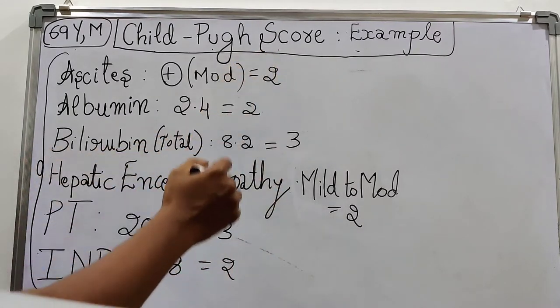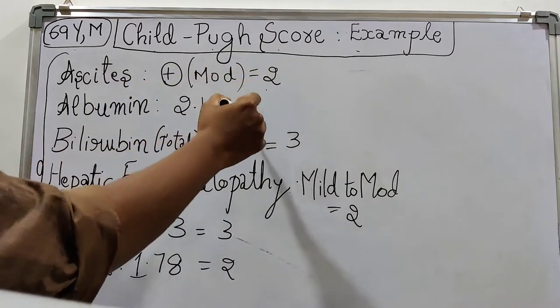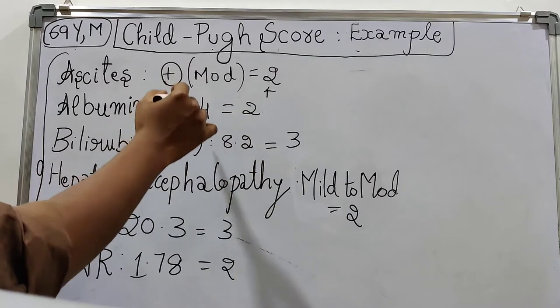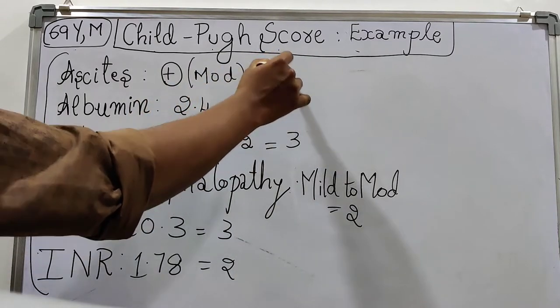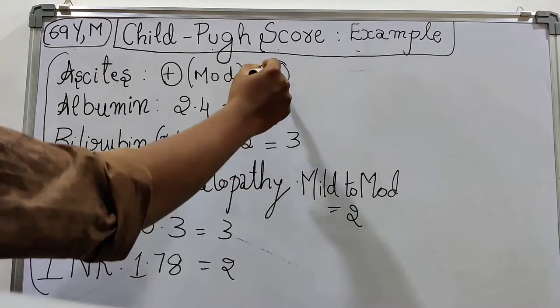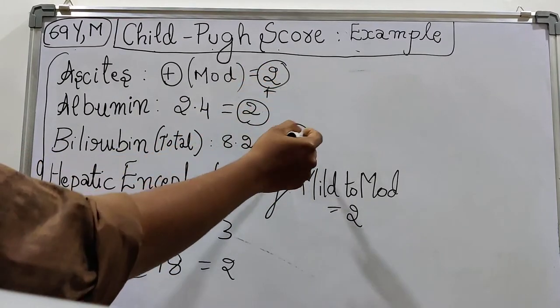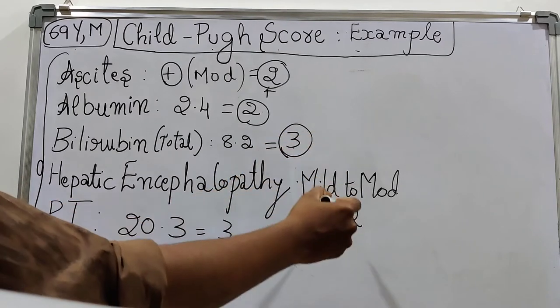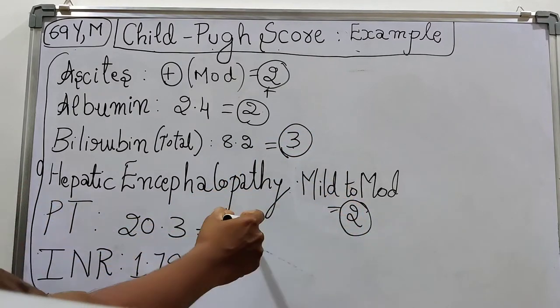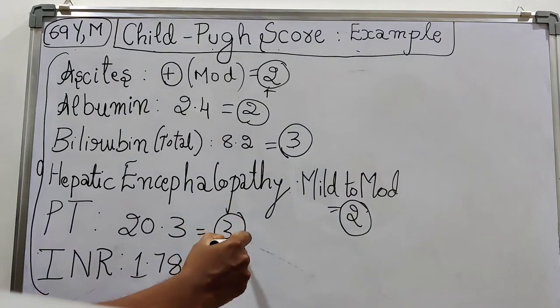Now we will sum up all these scores. We are summing up the scores, not the values. Ascites score is 2, plus albumin 2, equals 4. Plus bilirubin 3 equals 7. Plus hepatic encephalopathy 2 equals 9. Plus prothrombin time 3 equals 12. Plus INR 2 equals 14. So total score is 14.